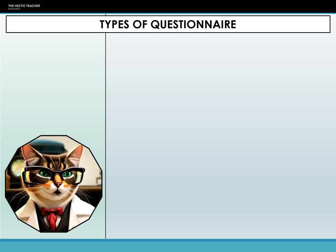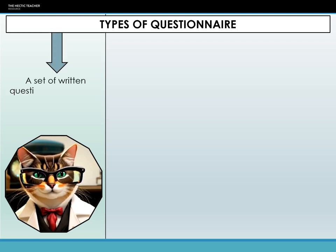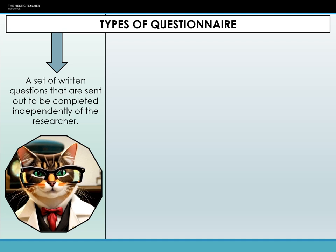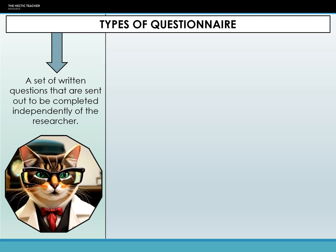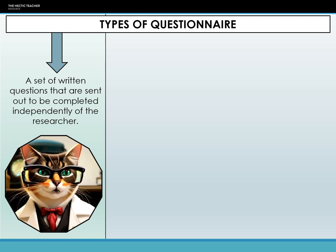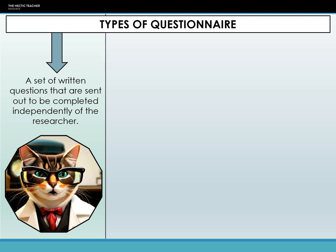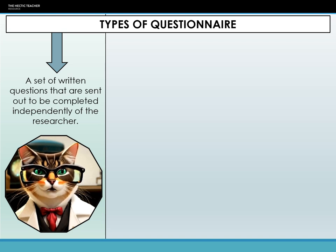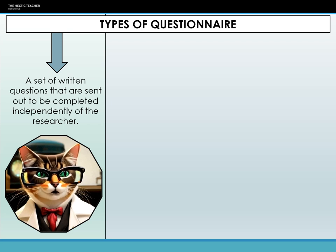The next method we are going to discuss are questionnaires. A questionnaire is essentially a set of structured questions crafted to gather specific pieces of information from those answering, and it is completed away from the researcher. One of the main advantages of questionnaires is the ability to reach a large number of participants, offering a wider perspective. They're also cost-effective, straightforward to analyze, and they can offer participants anonymity, which can sometimes yield more honest responses.